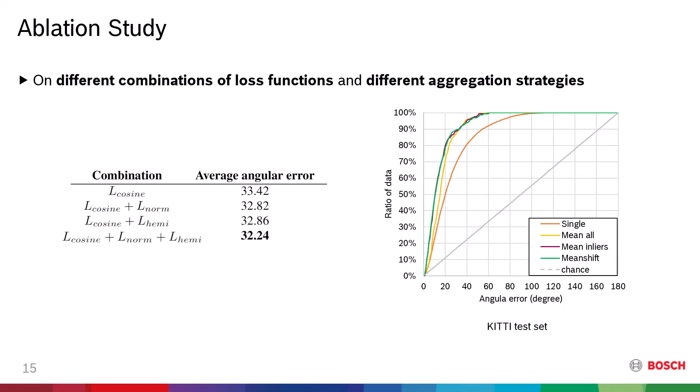We conducted a small experiment on different combinations of loss functions. This table represents the combinations we considered and their corresponding average angular errors on the Sun360 test set. The L-cosine metric was set as the default loss function as it dominantly drives the training. The result shows that our network performs best when the three loss functions are utilized together. We interpret the performance gain from including L-norm as removing ambiguity that comes from different points in the same direction.